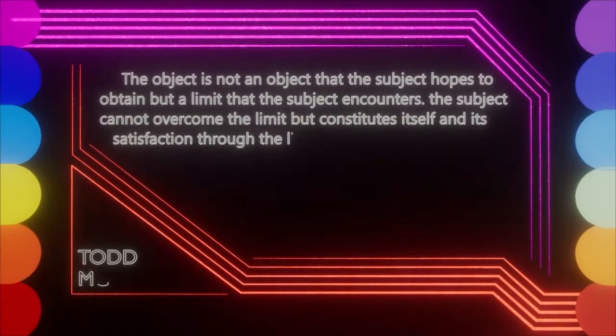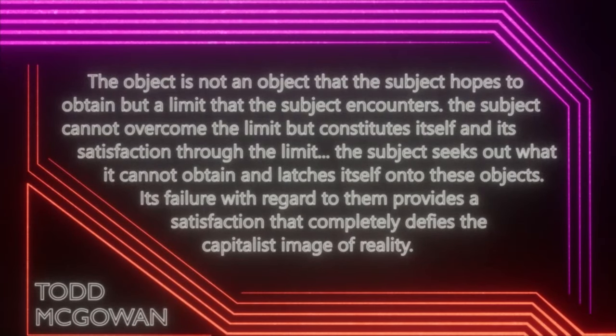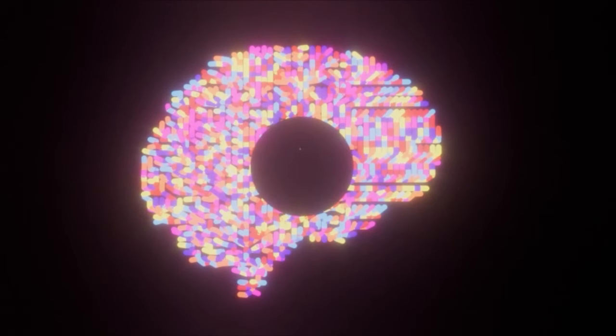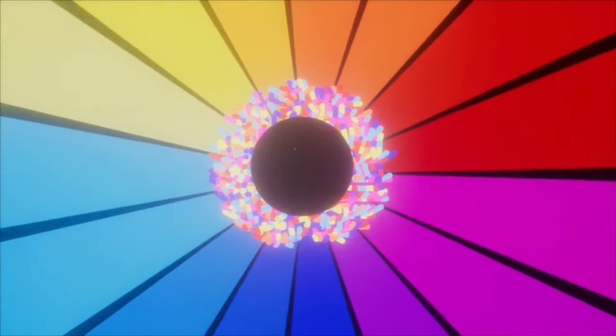Todd McGowan describes Abjaya as a limit that constitutes our subjectivity. He states that the object is not an object that the subject hopes to obtain, but a limit that the subject encounters. The subject cannot overcome the limit, but constitutes itself and its satisfaction through the limit. The subject seeks out what it cannot obtain, and lashes itself to these objects. Its failure with regard to them provides a satisfaction that completely defies the capitalist image of reality. And so Abjaya is never a particular object, nor is it nothingness, but a step beyond nothingness, an empty place, an absence, hence Lacan's Abjaya functioning as a sort of algebraic variable. We can think of Abjaya as a positive negativity, a positive lack, or a material embodiment of lack.